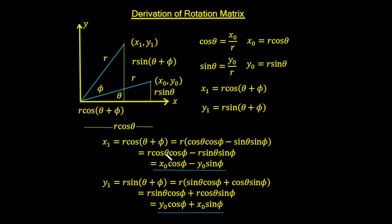We know that r·cos(θ) is nothing other than x0, so we can replace that with x0. And r·sin(θ) is nothing other than y0. Now for y1: y1 is r·sin(θ+φ), which by the second trig identity equals r·sin(θ)·cos(φ) plus r·cos(θ)·sin(φ). Multiplying that out, r·sin(θ) is y0 and r·cos(θ) is x0. So we have the second part of our matrix.